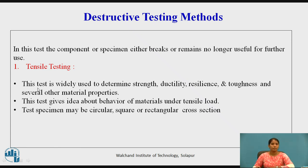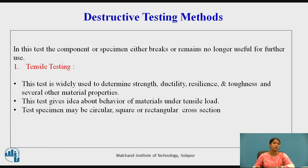Tensile testing: in this, the component or specimen either breaks or is no longer useful for further testing. The test is widely used to determine strength, ductility, resilience, toughness, and other properties. The test gives an idea about the behavior of a material under tensile load. The specimen may be circular, square, or rectangular in cross section.